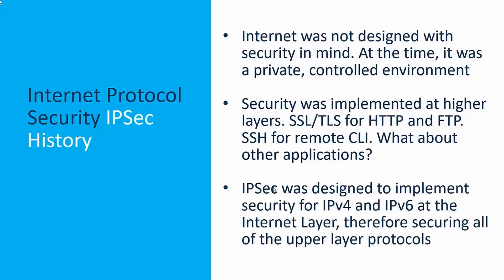If we start with its history, we can see that the internet was not designed with security in mind. At that time, it was a private controlled environment — it wasn't the giant public network of things that it is today. TCP/IP wasn't designed with embedded security as a foremost concern because at that time it wasn't envisioned as to what it would become.